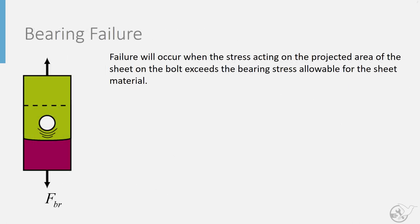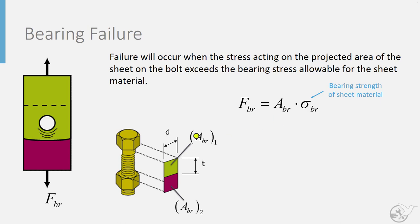For bearing failure, this occurs when the stress acting on the projected area of the sheet on the bolt exceeds the bearing stress allowable for the sheet material — which is a material property. The bearing failure force is the bearing area times that bearing stress allowable. When there are multiple plates you can have more than one bearing area. If both sheets are the same thickness and material results will be the same, but dissimilar or different thickness materials can yield a difference in bearing failure force for those different plates.